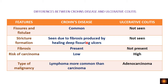Stricture formation is more common in Crohn's disease because the deep fissuring ulcers heal by fibrosis, and the resulting contracture produces strictures. Since ulcerative colitis does not have such deep ulcers, stricture formation is not seen there. Fibrosis from the healing process is present in Crohn's but not in ulcerative colitis. The risk of malignancy is higher in ulcerative colitis, with more dysplastic changes in the lining epithelium.